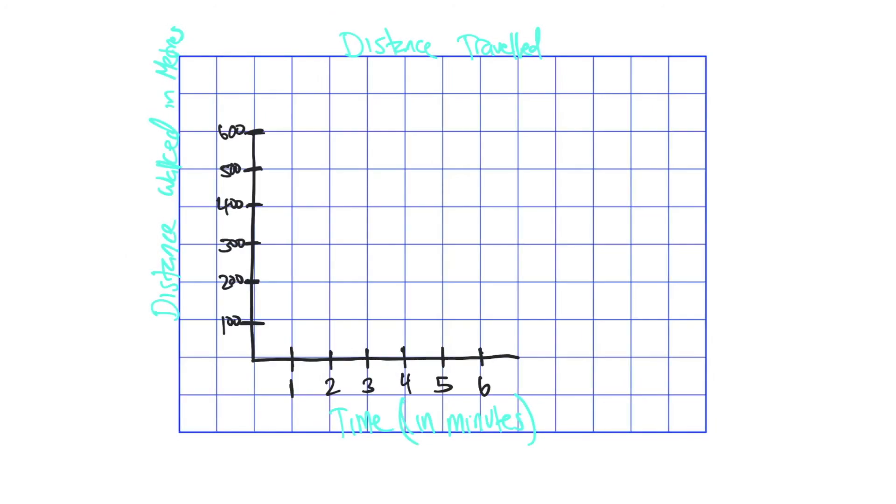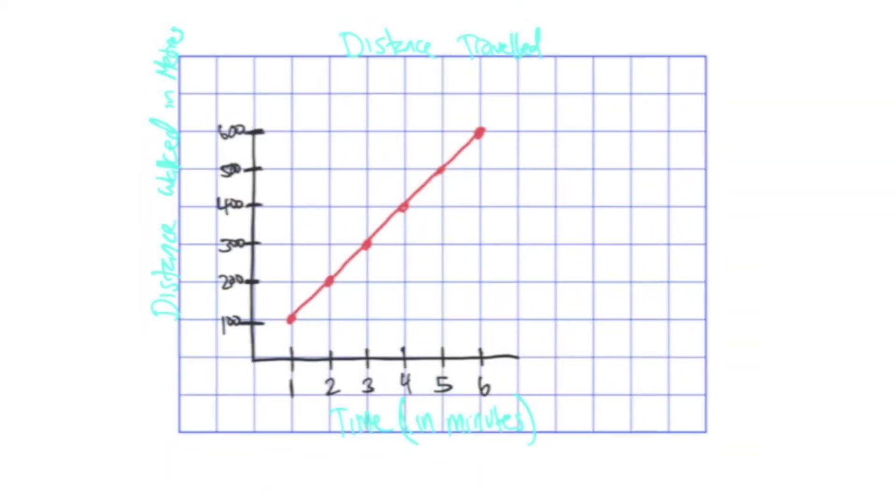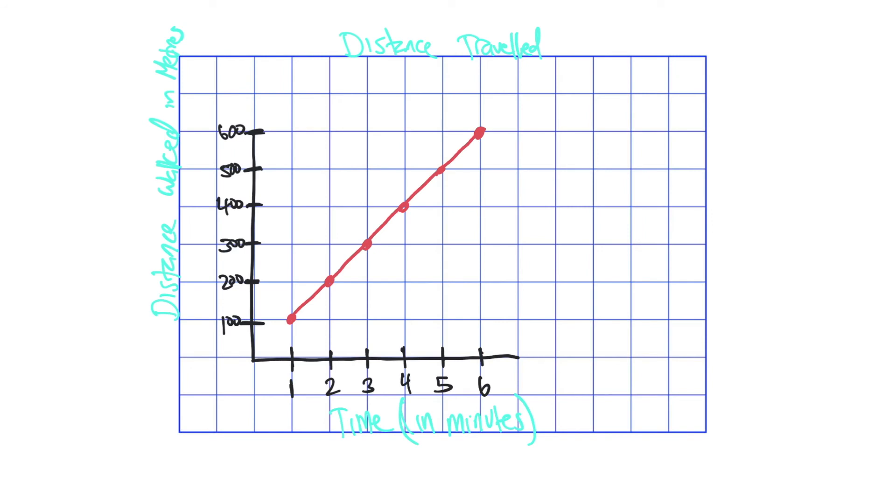So here's a graph that we can look at distance traveled. So at the bottom here we have how many minutes and how many meters. So let me plot the points. So now the question I'm going to ask is how many meters were walked in two and a half minutes.